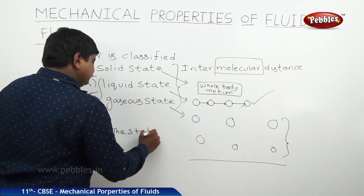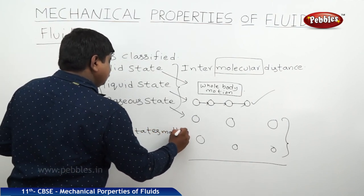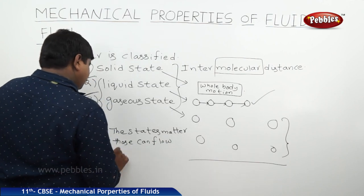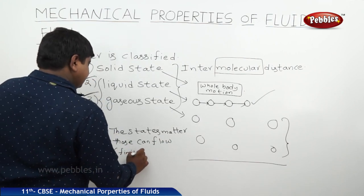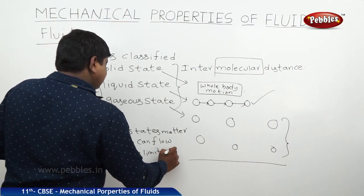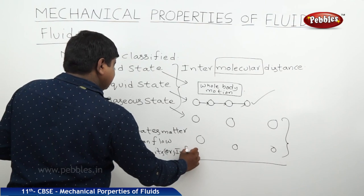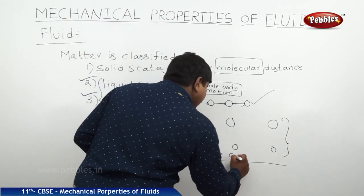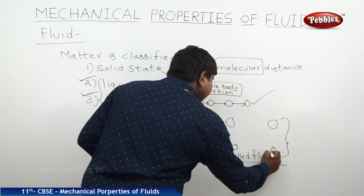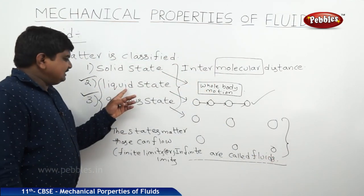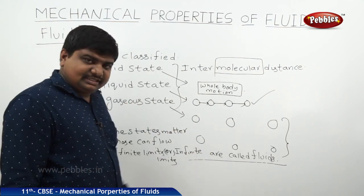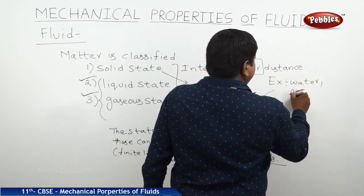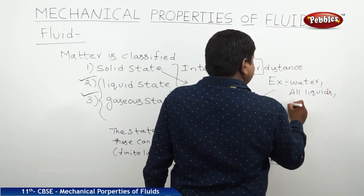So the states of matter that can flow, maybe finite limits or infinite limits, are called fluids. Therefore, liquid state matter plus gaseous state matter are collectively called fluids. Examples are water, all liquids, and all gases.